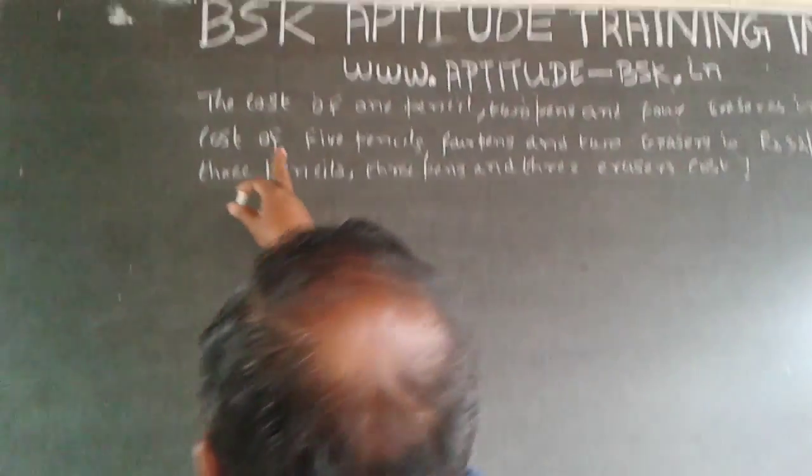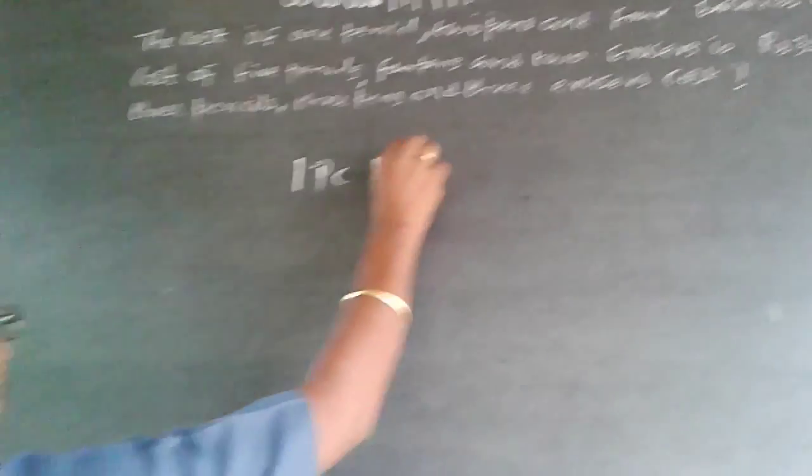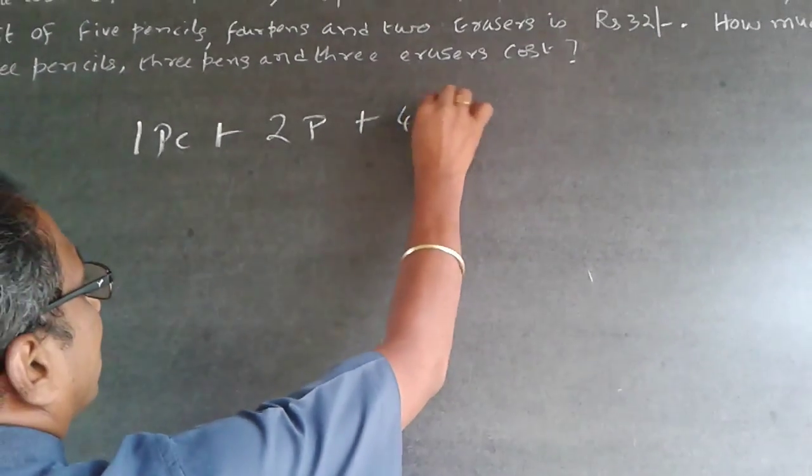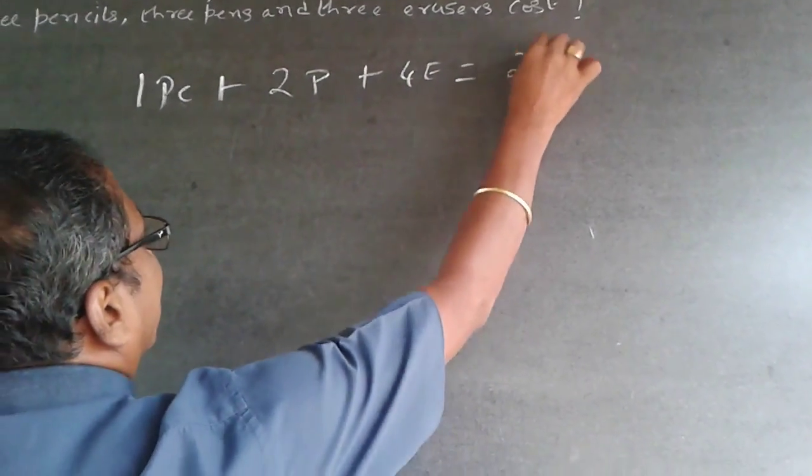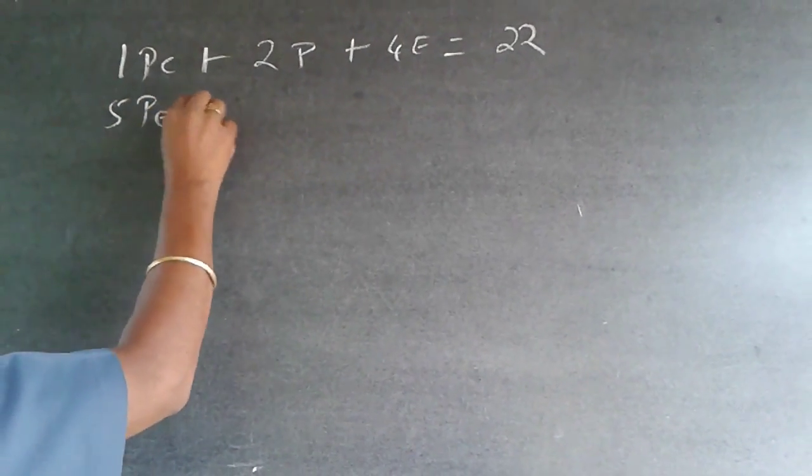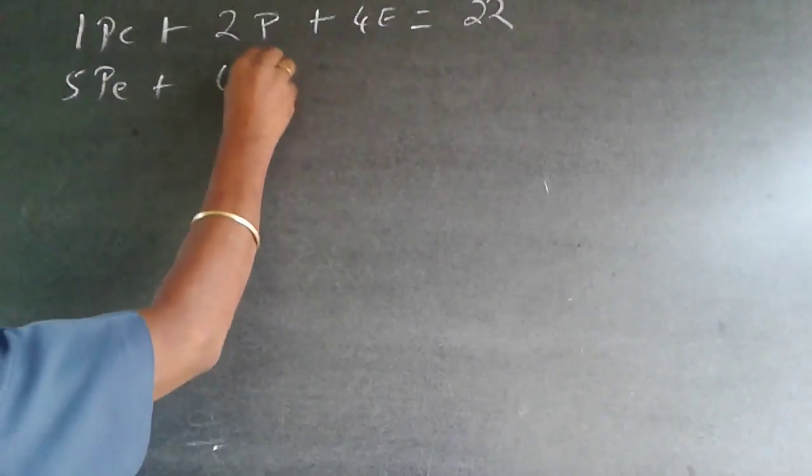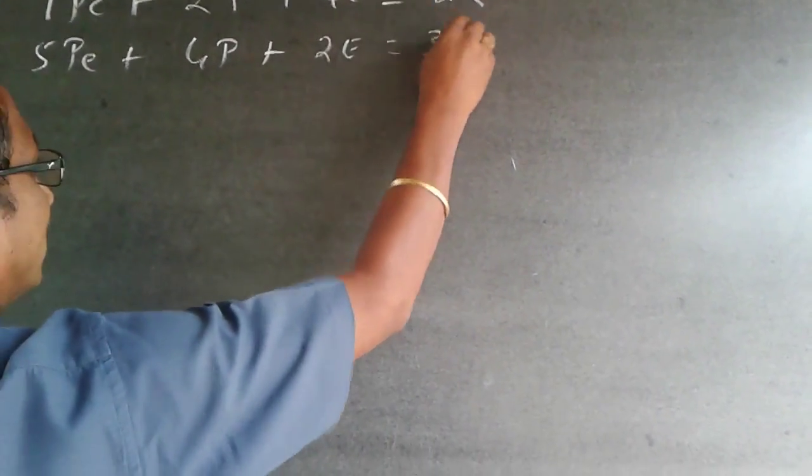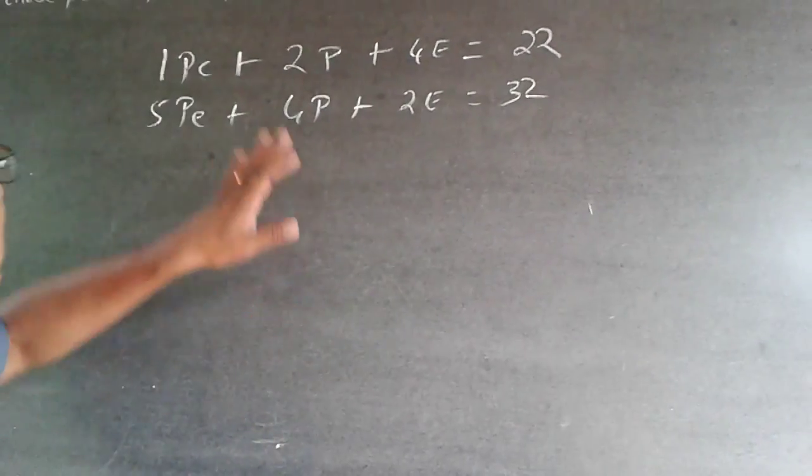So here, what it says is the cost of one pencil plus two pens plus four erasers will be 32. This is what is given. Now what they have asked is three pencils, three pens, and three erasers.